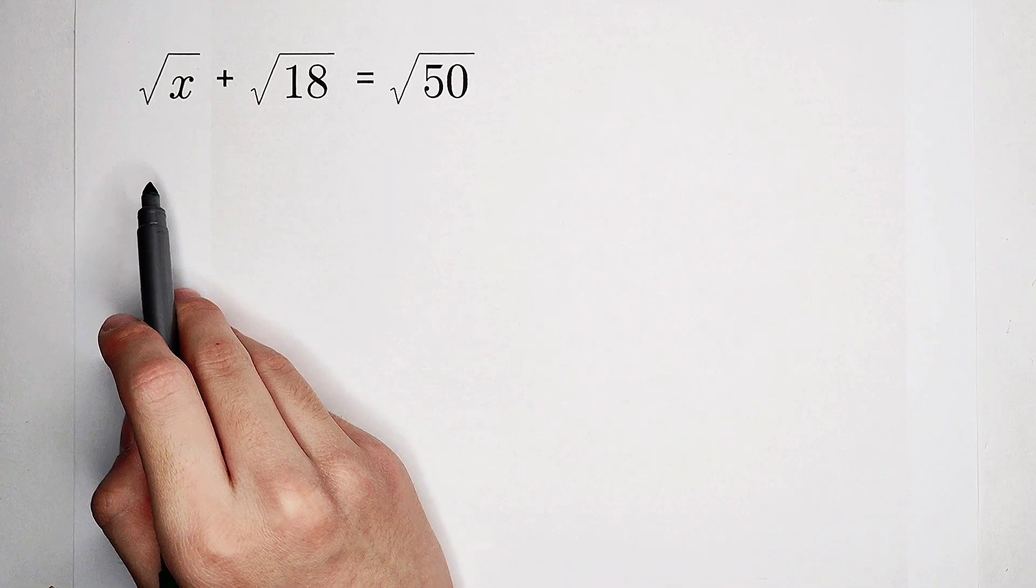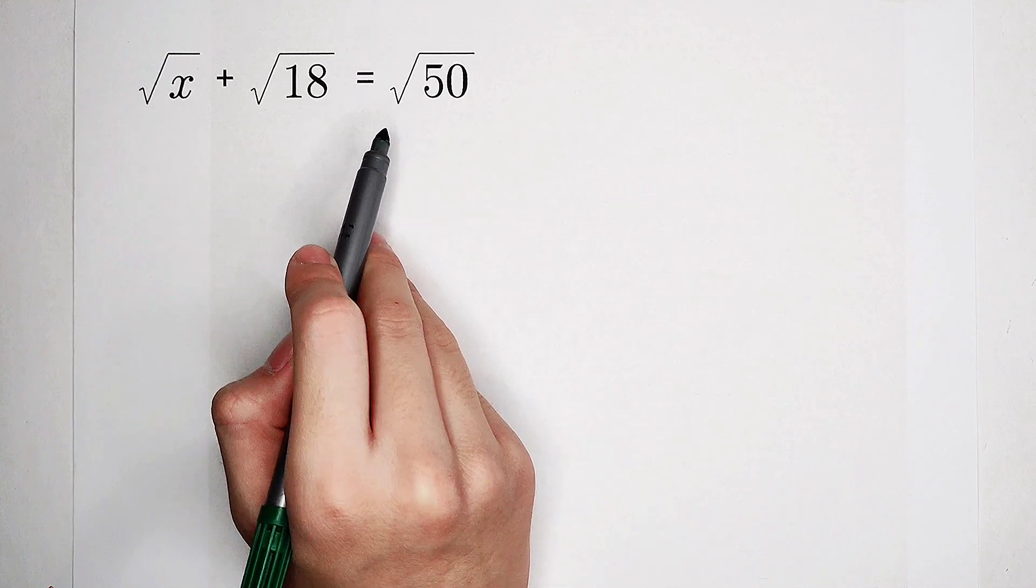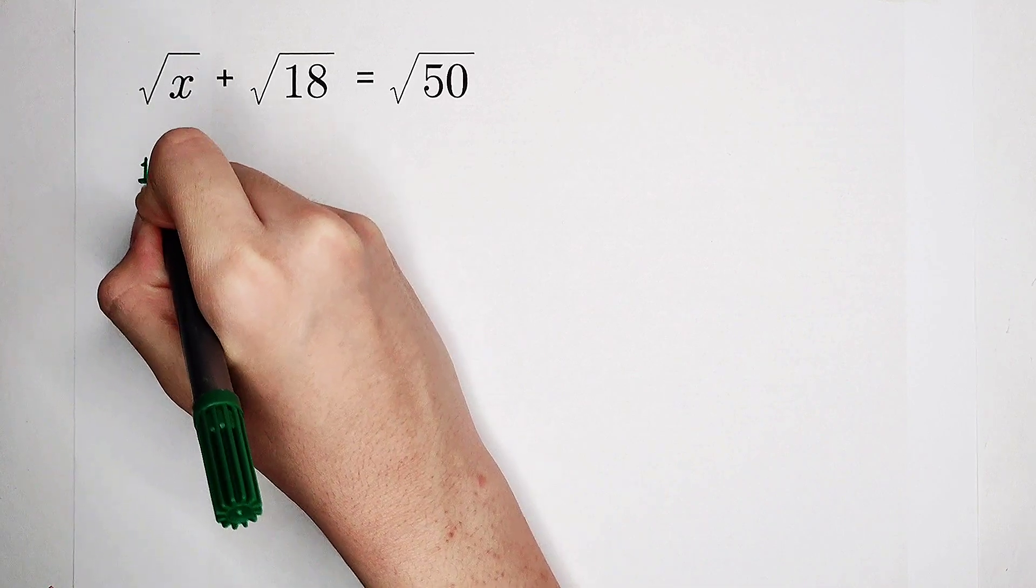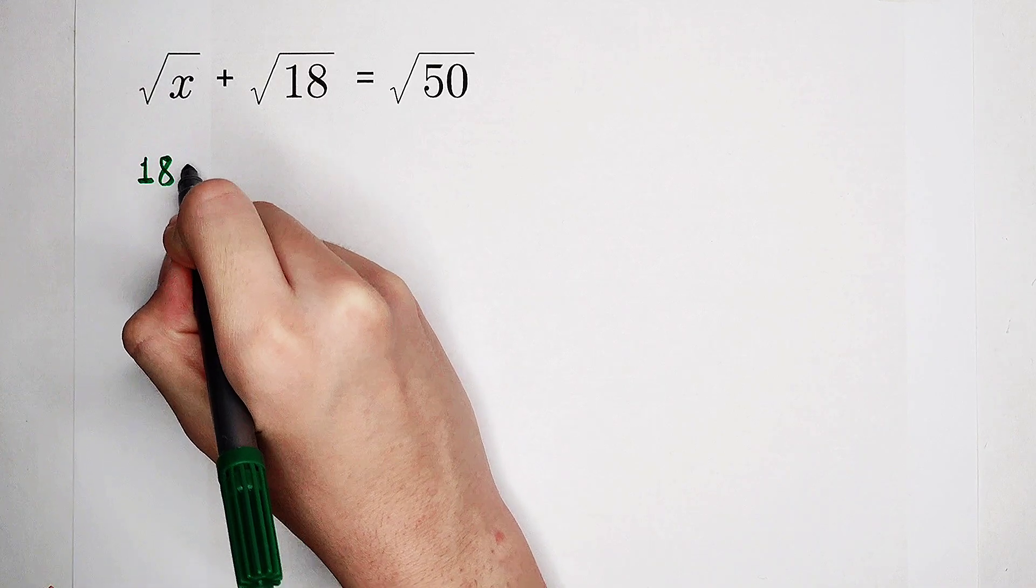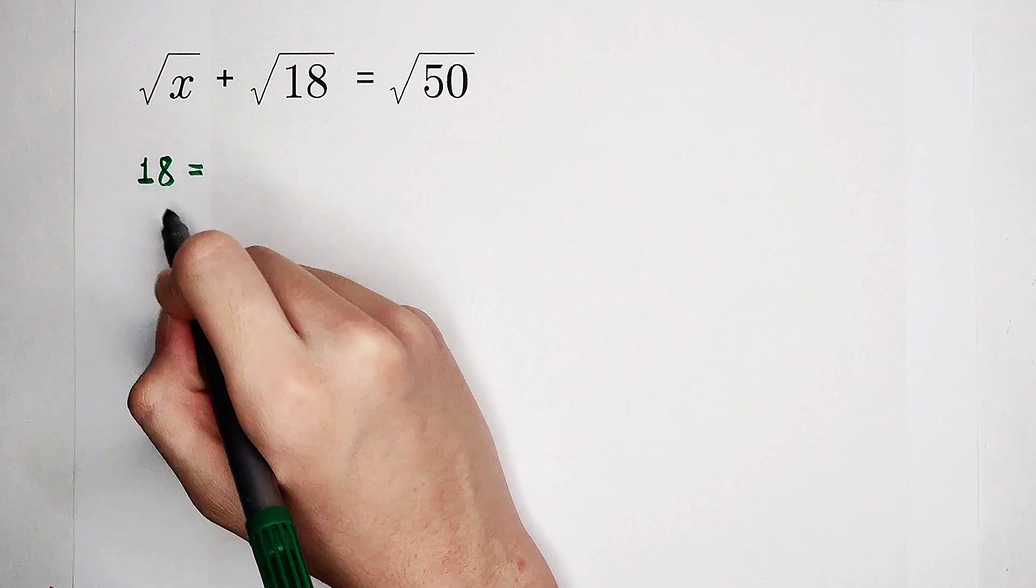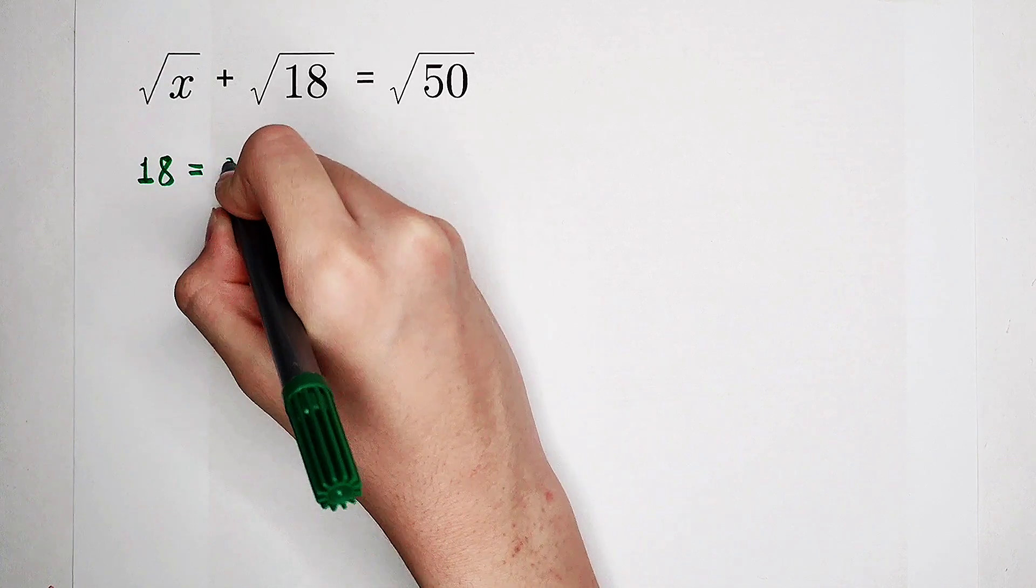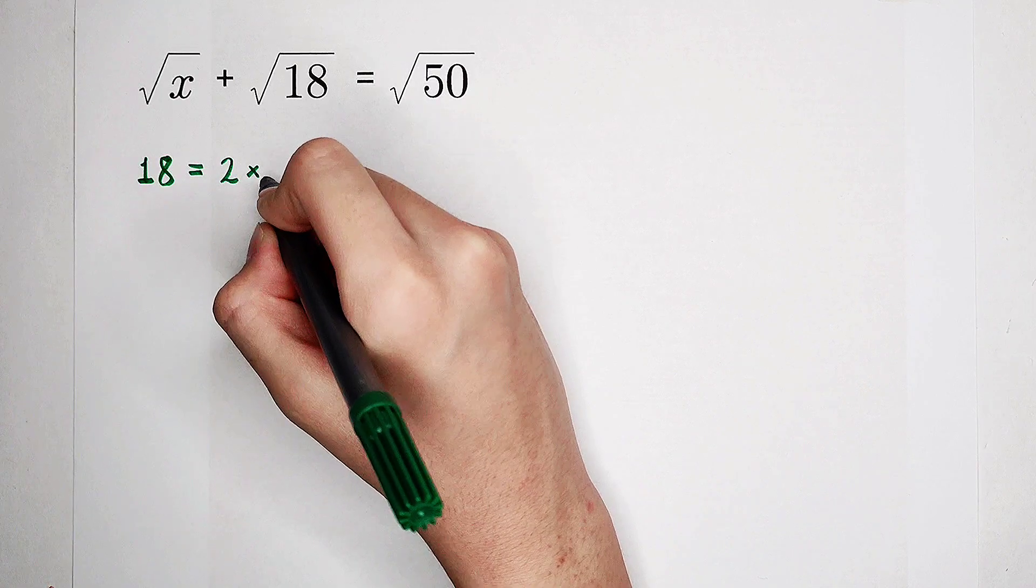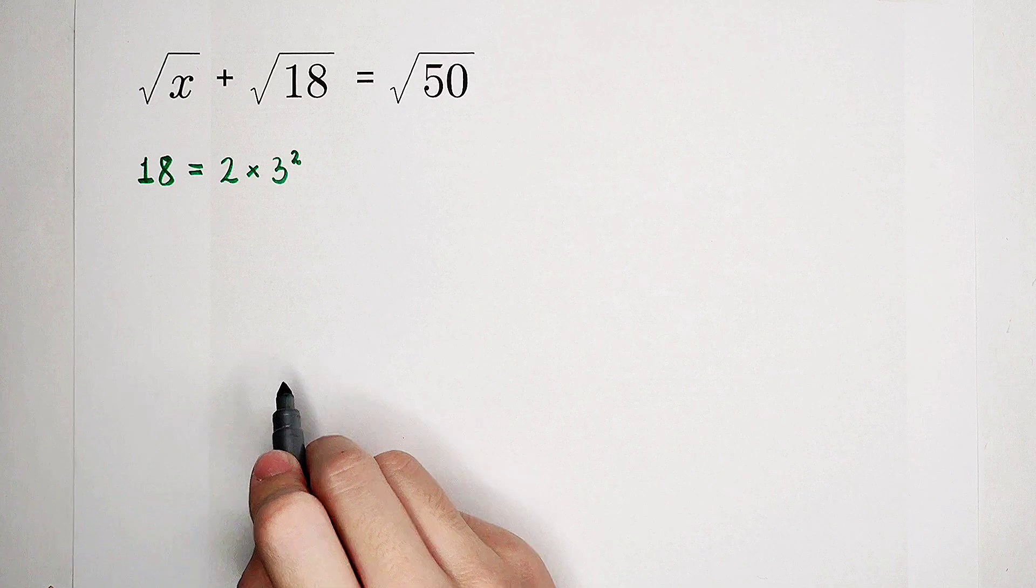First of all, we should factorize the prime factors of 18 and 50. Firstly, 18. A nice number, and I like it very much. Because in this problem, 18 is 2 times 9. So, 2 times 9. 9 is 3 times 3. So it is 2 times 3 squared. This is 18.